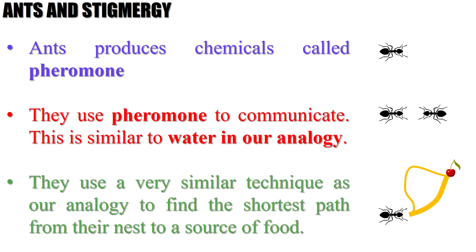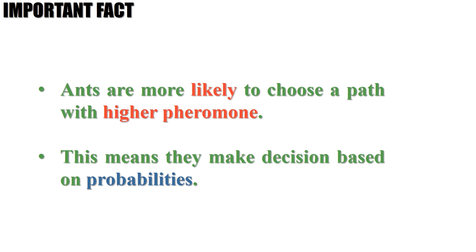This is roughly how ants find the shortest path from a nest to a food source. Instead of water, ants produce chemicals called pheromone. There are many types of pheromones for different purposes in an ant colony, one of which is used to mark the path towards a food source. Most ants are also blind, so that's the only way they can communicate — a good example of stigmergy in nature. The key difference between ants and the people in our analogy is that ants are more likely to choose a path with stronger pheromone level, making decisions based on probabilities. The higher the pheromone level, the higher the probability of choosing that path.